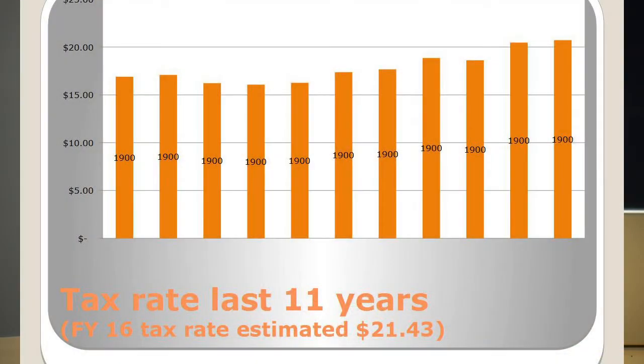In 2008, our tax rate was $16.06 per $1,000. In 2015, it's $20.72 per $1,000, and in 2016 our proposed budget's estimated tax rate would be $21.43. The graph illustrates the steady and continuous climb of the tax rate. Without property values increasing periodically, the tax rate absorbs all of the increases to the town's annual budget. That's concerning to us, and we went into this year's budget formulation with an eye on the tax rate.